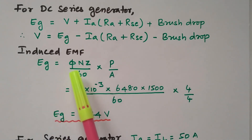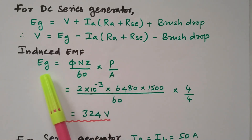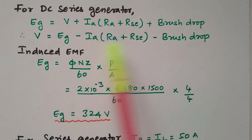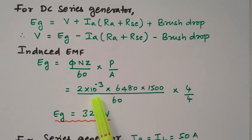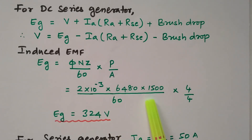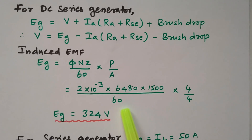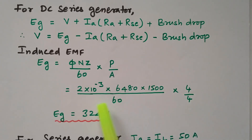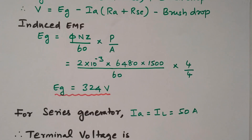The EMF formula is EG = (φ·N·Z ÷ 60) × (P ÷ A). Here φ = 2 × 10⁻³ Wb, Z = 6480, N = 1500 rpm, P = 4 poles, A = 4 parallel paths. Substituting: EG = (2 × 10⁻³ × 1500 × 6480 ÷ 60) × (4 ÷ 4) = 324 volts. The generated voltage EG is 324 volts.